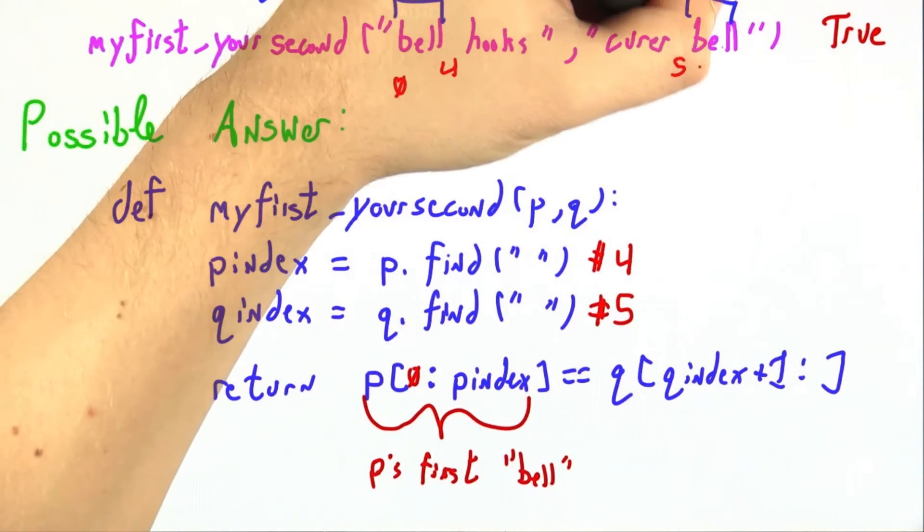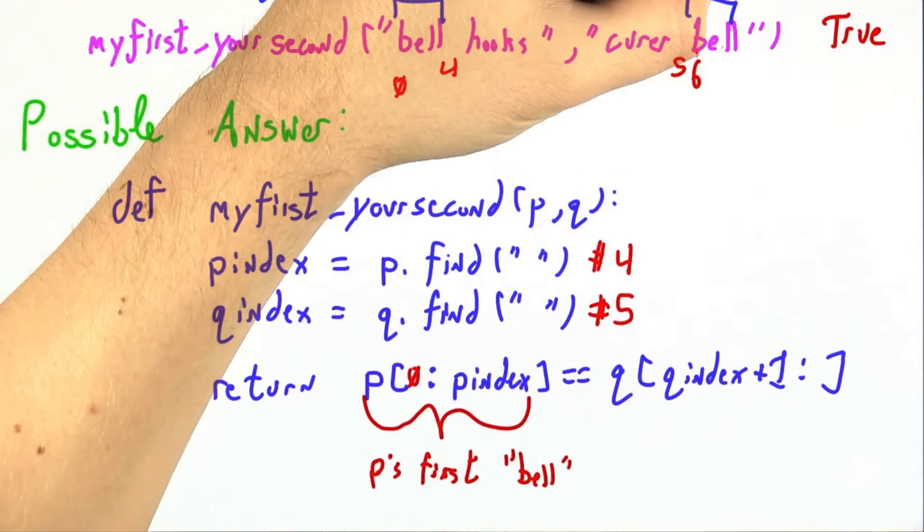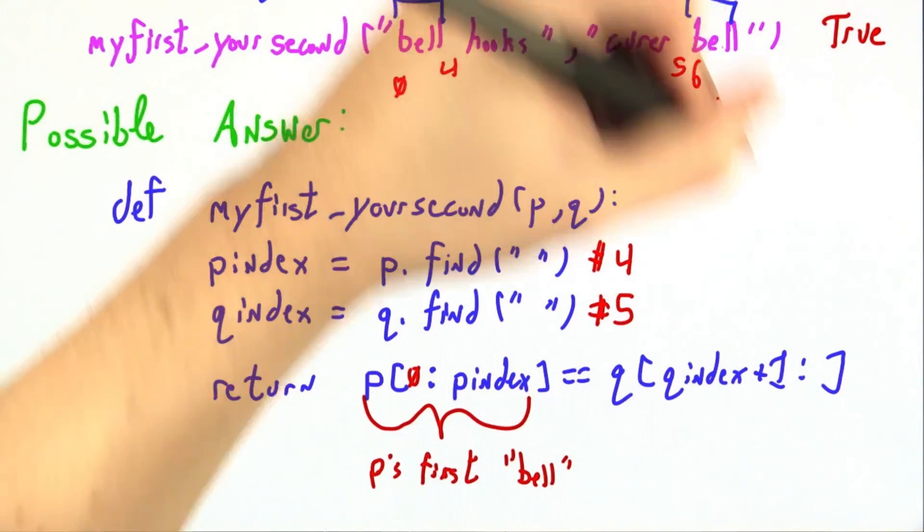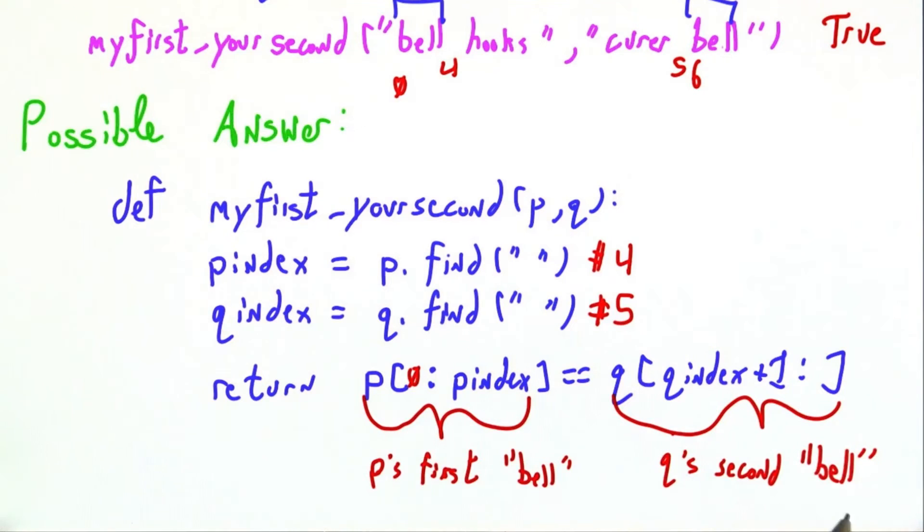For q, I don't want to start at position 5. I actually want to start at position 6, starting with the b, and going to the end of the word. So this is q's second word, which in our running example is also bell. Since bell equals bell, it will just return true.